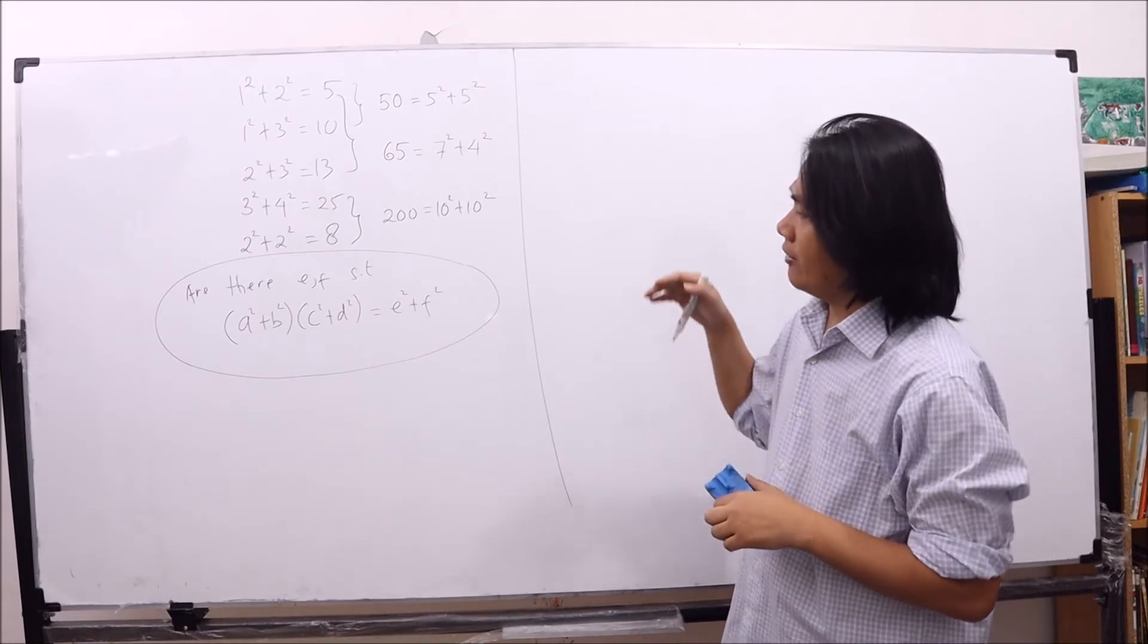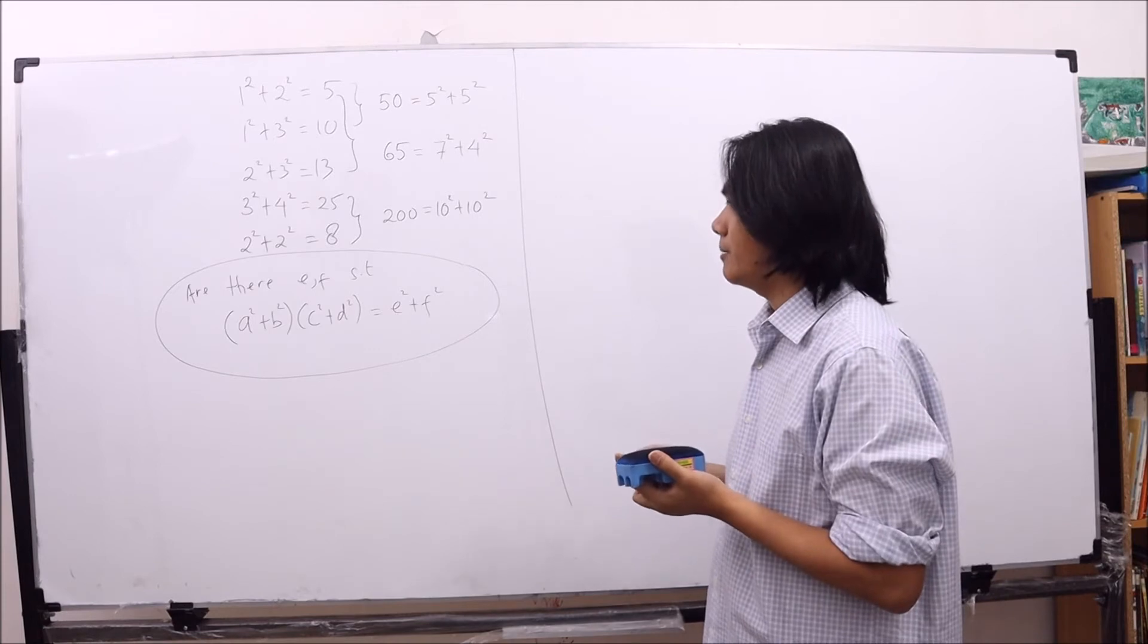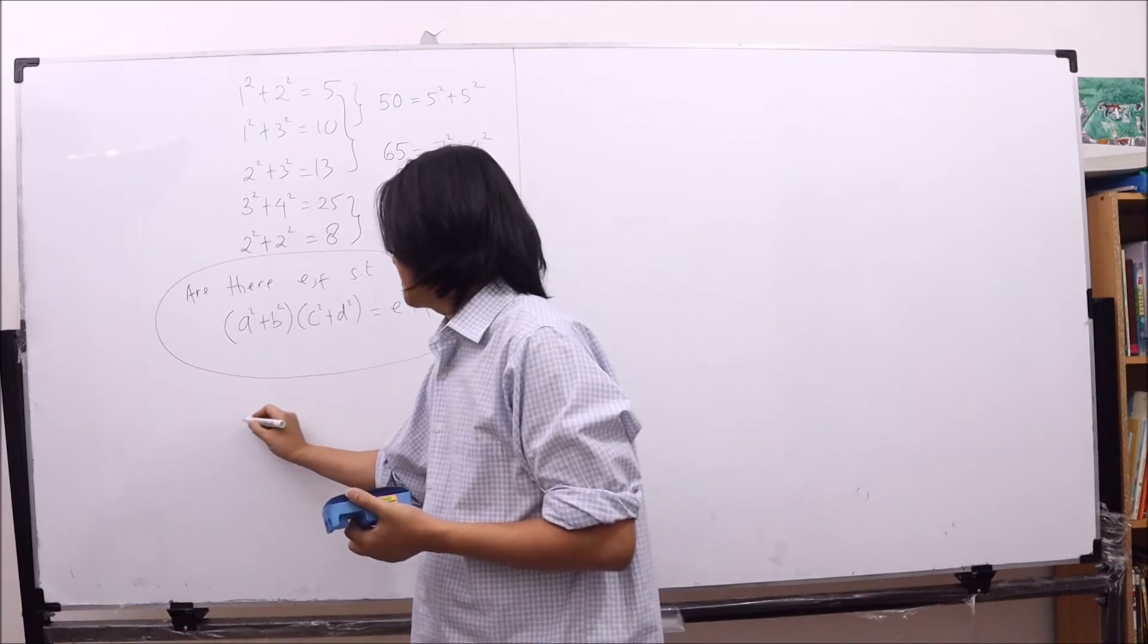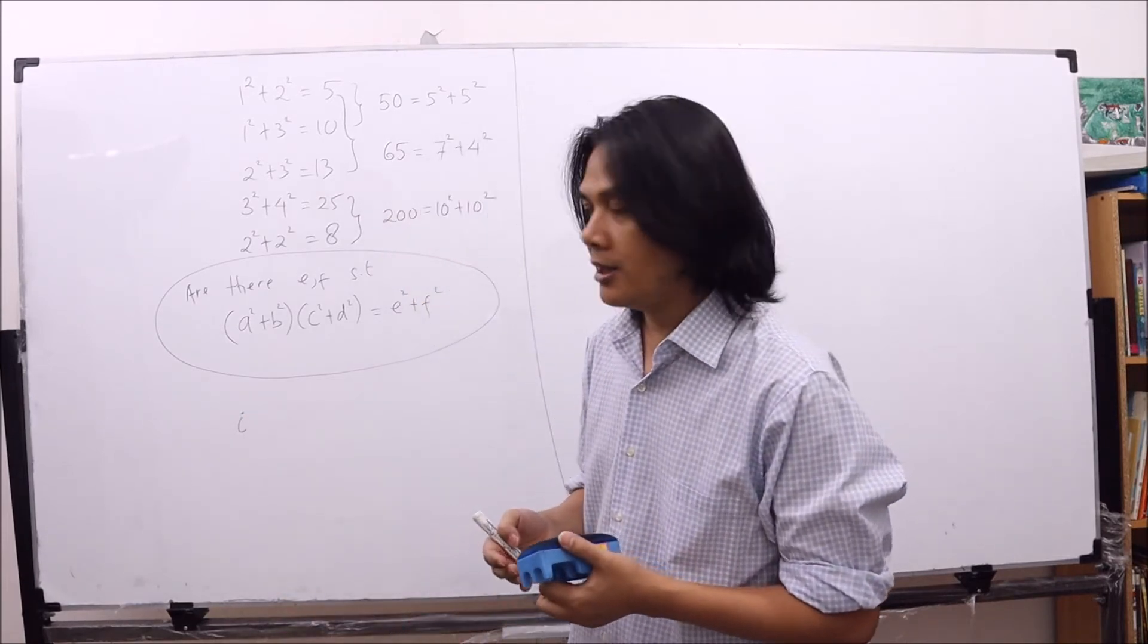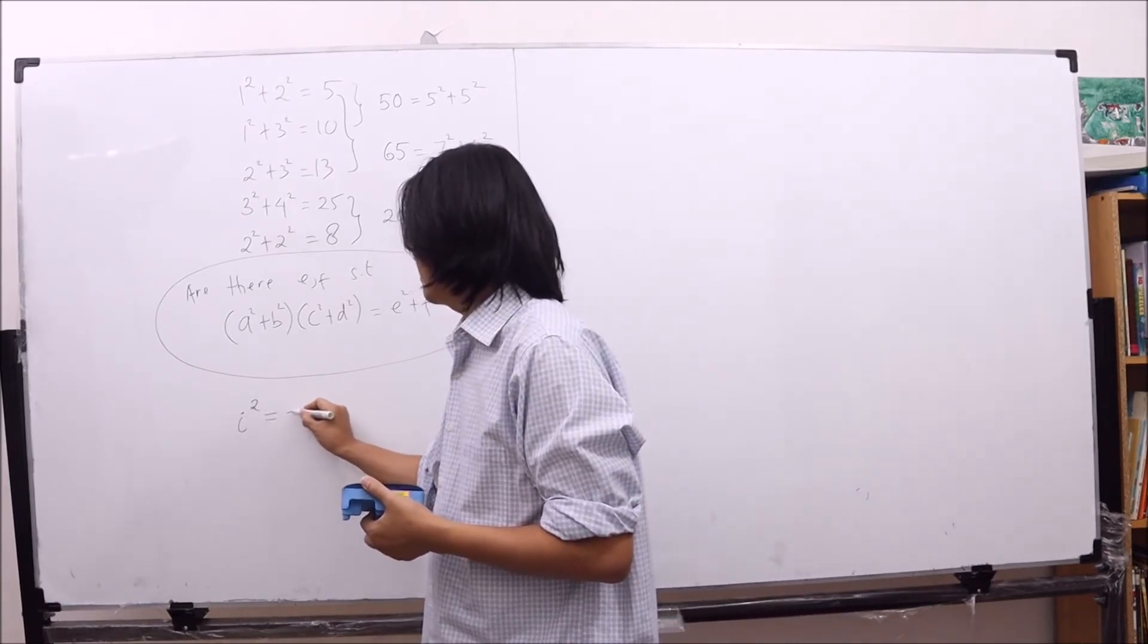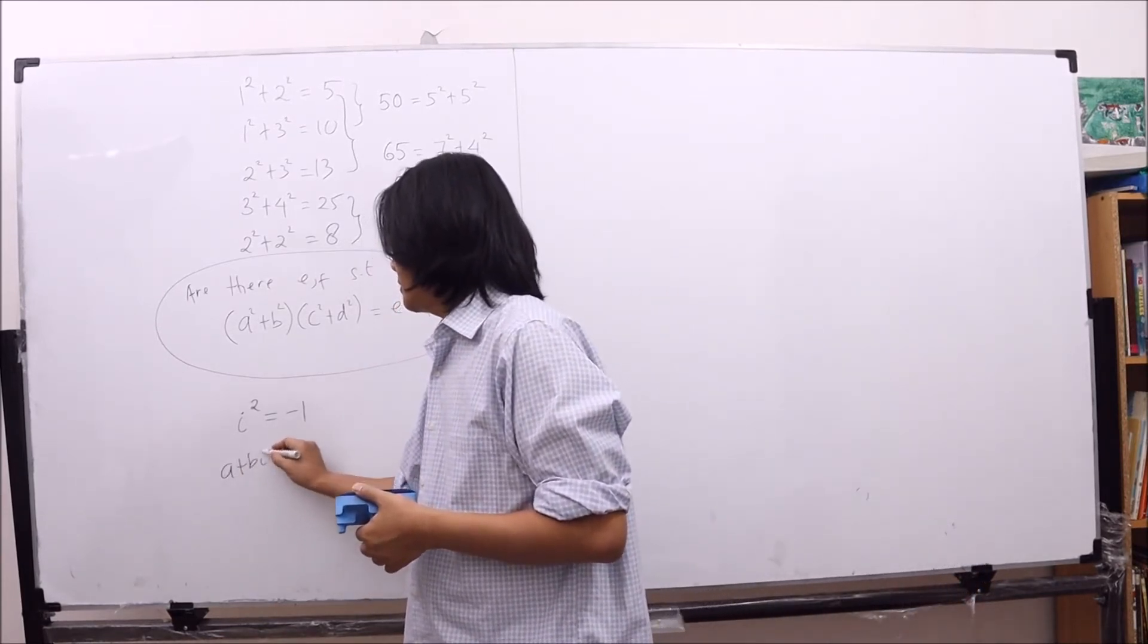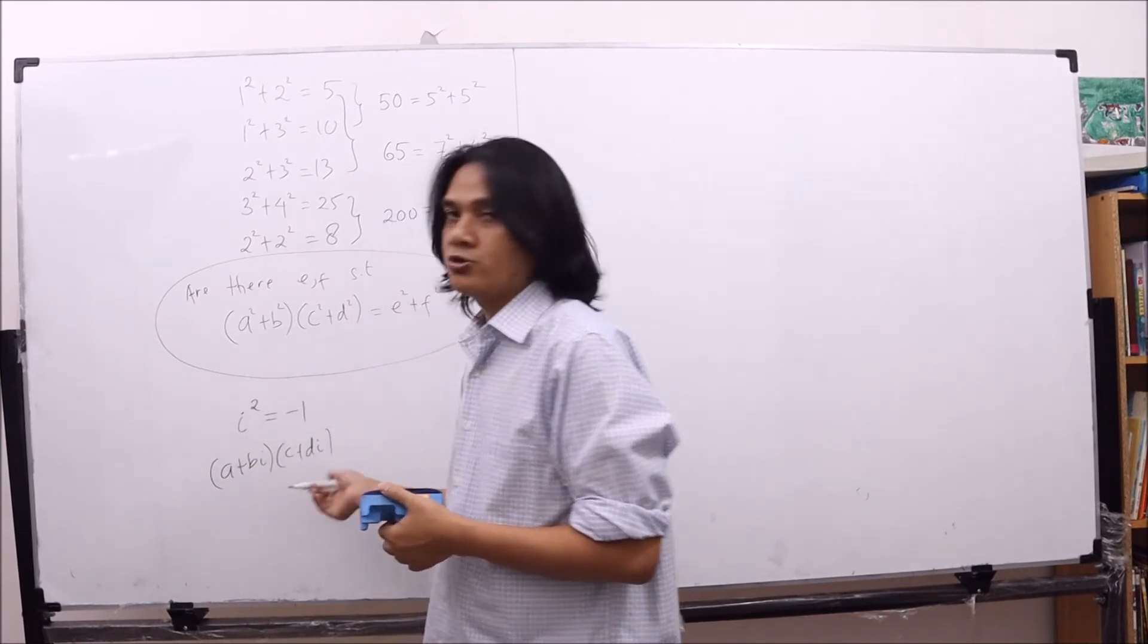Now, in order to have this identity, we're going to use some knowledge of complex numbers. Nothing fancy. Remember that in the complex number, we have some imaginary number that we call it as i, and the property of i is that i squared is equal to negative one.